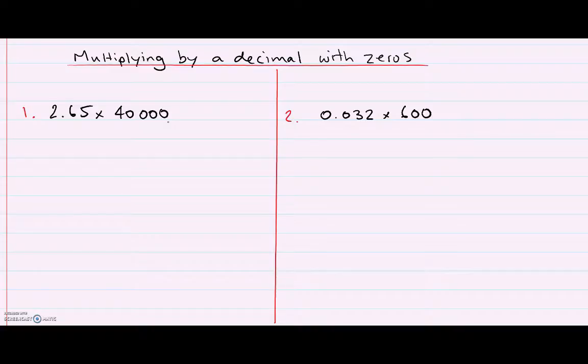What I'm going to do is rewrite this a little bit as 2.65 lots of 10,000 lots of 4, and I can split that up because 10,000 times 4 is 40,000.